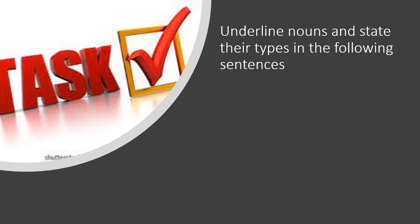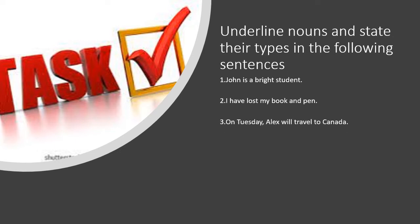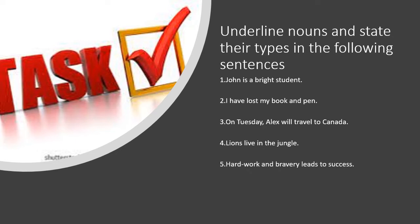Having looked at examples and types of nouns, let us now identify nouns and state their types in the following sentences. First: John is a bright student. Second: I have lost my book and pen. Third: On Tuesday, Alex will travel to Canada. Fourth: Lions live in the jungle. And fifth: Hard work and bravery leads to success.